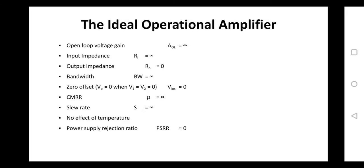Coming to the first topic — ideal values of an op-amp. An op-amp has both AC and DC characteristics, but among these we should know what the ideal values must be and what practical values we actually get.